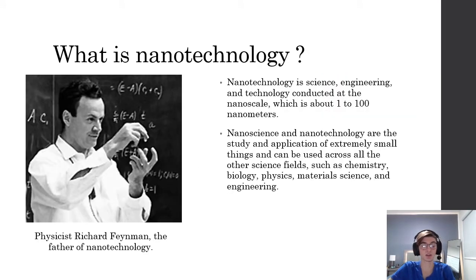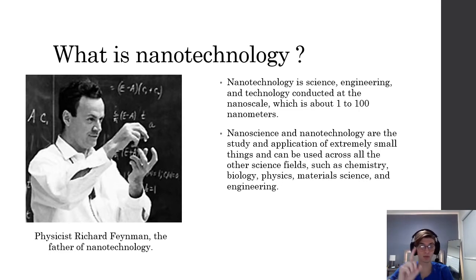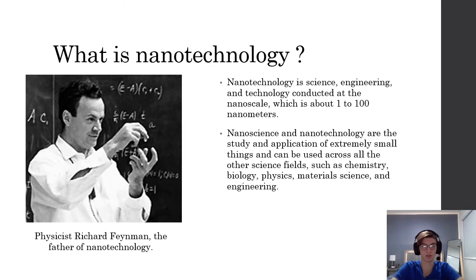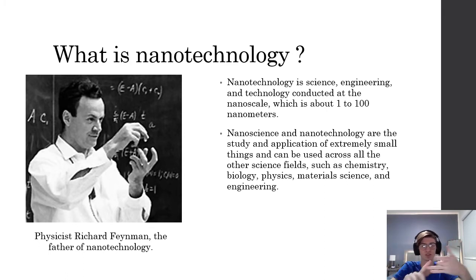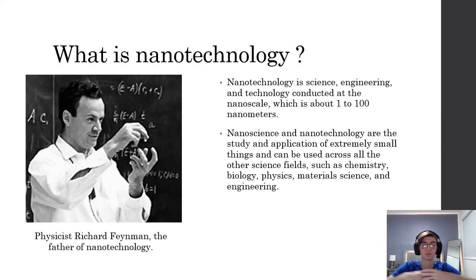What is nanotechnology? Nanotechnology is science, engineering, and technology — everything at a really small scale called nanoscale, which is about one to a hundred nanometers. Nanoscience and nanotechnology are the study and application of extremely small things that are used across all other science fields, such as chemistry, biology, physics, material science, and construction. It's a process to reduce waste and enhance the end product.